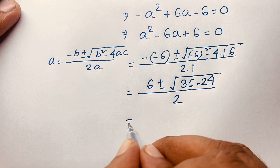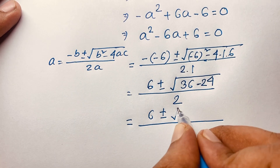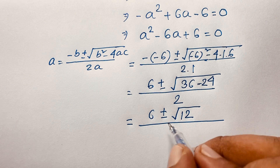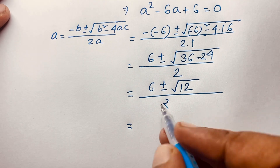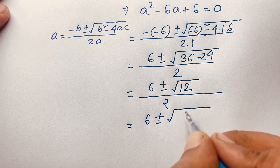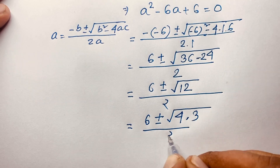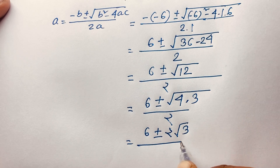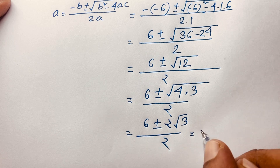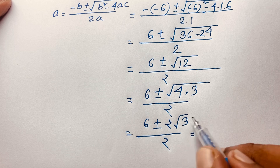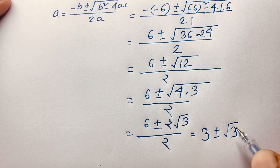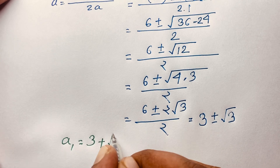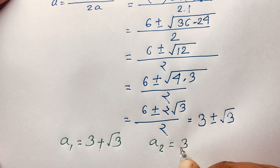I can see easily it is 6 plus or minus square root of 36 minus 24, which equals 12, over 2. Then 12 equals 4 times 3, so it becomes 6 plus or minus square root of (4 times 3), over 2. Square root of 4 is 2, so it is 6 plus or minus 2 times square root of 3, over 2. Dividing through by 2: 3 plus or minus square root of 3. So A₁ equals 3 plus square root of 3, and A₂ equals 3 minus square root of 3.